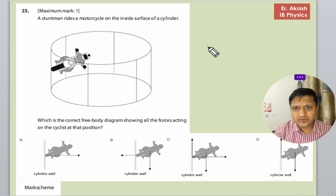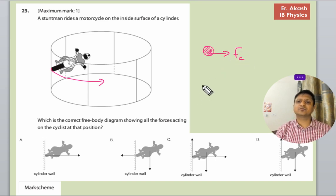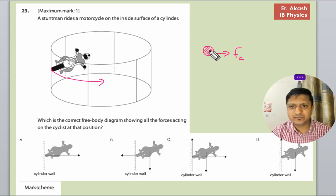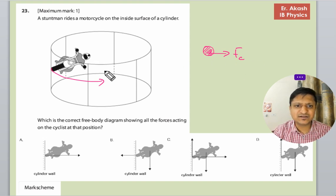Suppose there is a body. When this body is moving in a circular motion, there is a force called circular centripetal force that would act towards the centre.